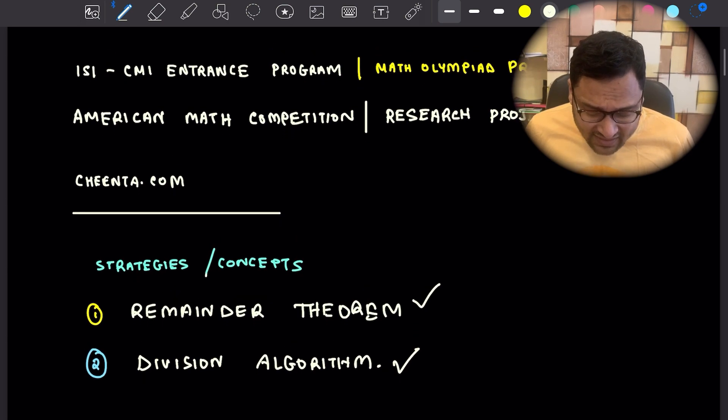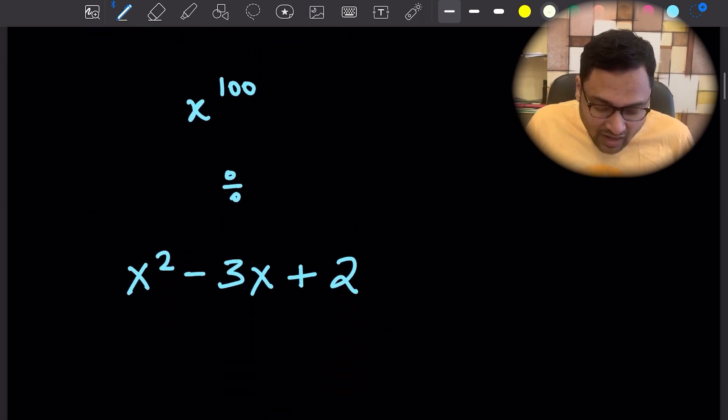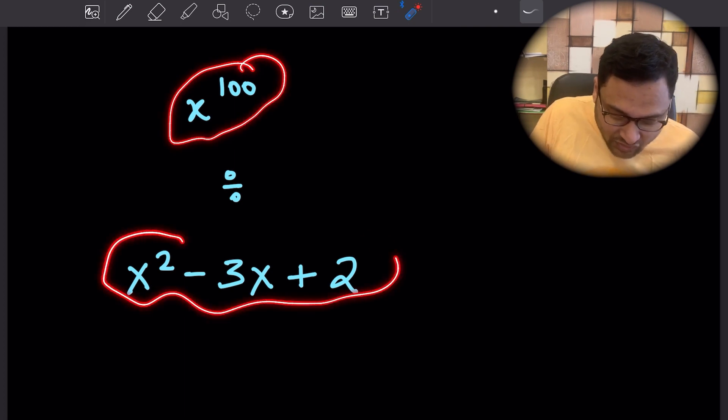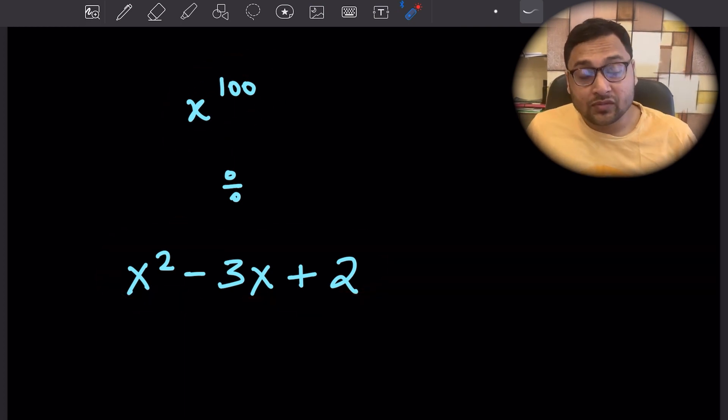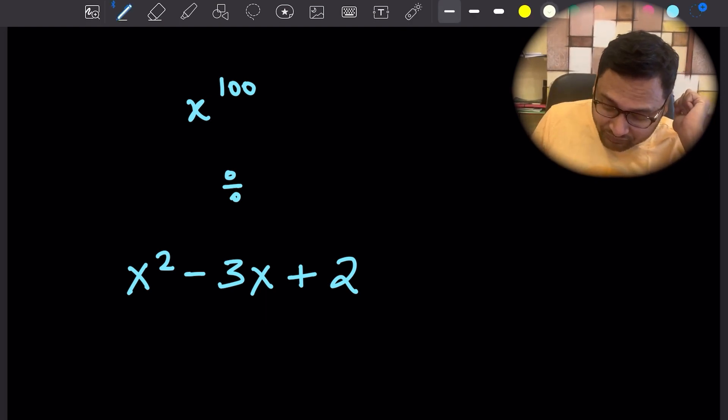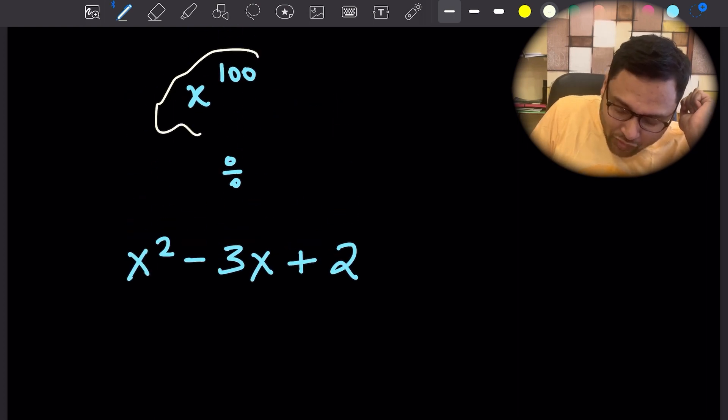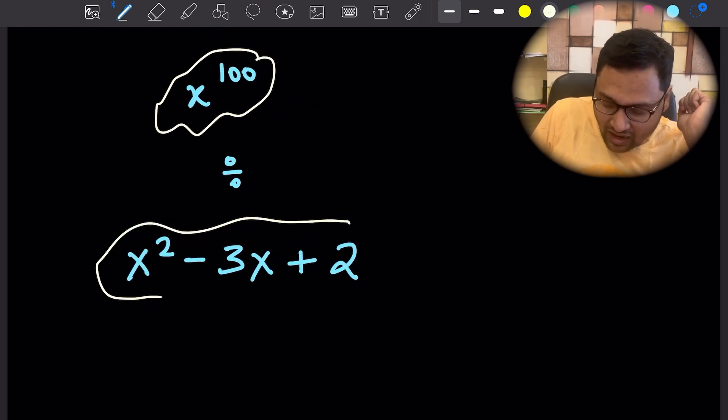Let's start with this problem. We are dividing x to the power 100 by x squared minus 3x plus 2. How are we going to go about it?